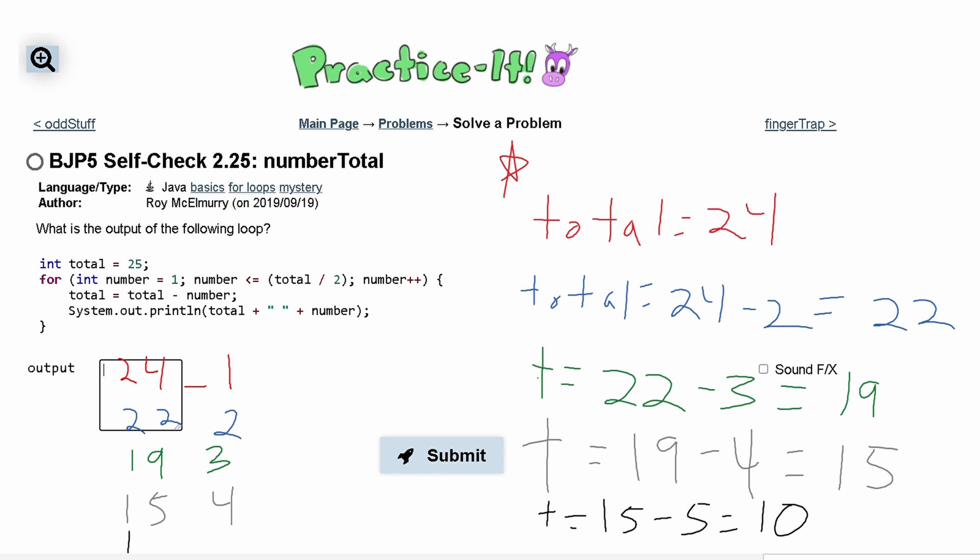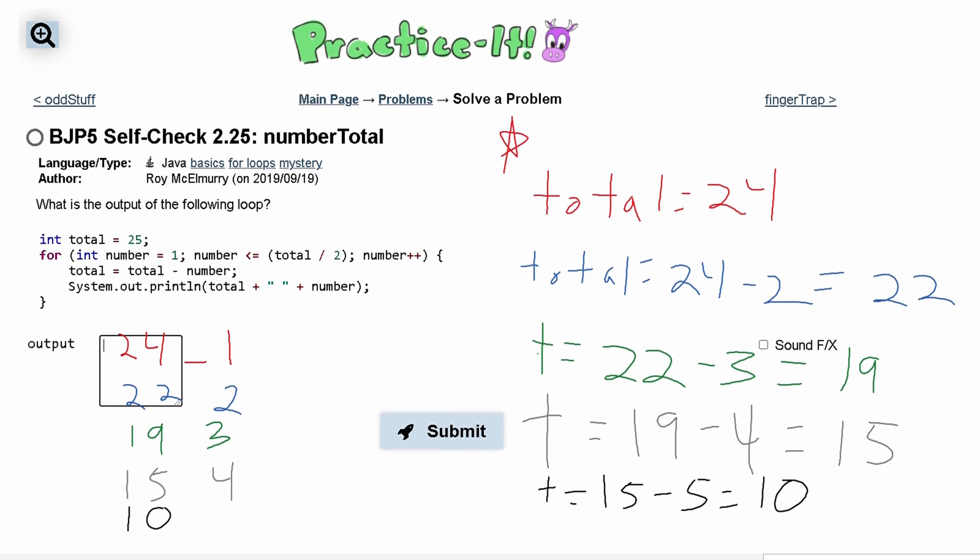So when we print this out we're going to have 10 and 4, or we're actually going to have 5 because we're on the fifth iteration of the loop.